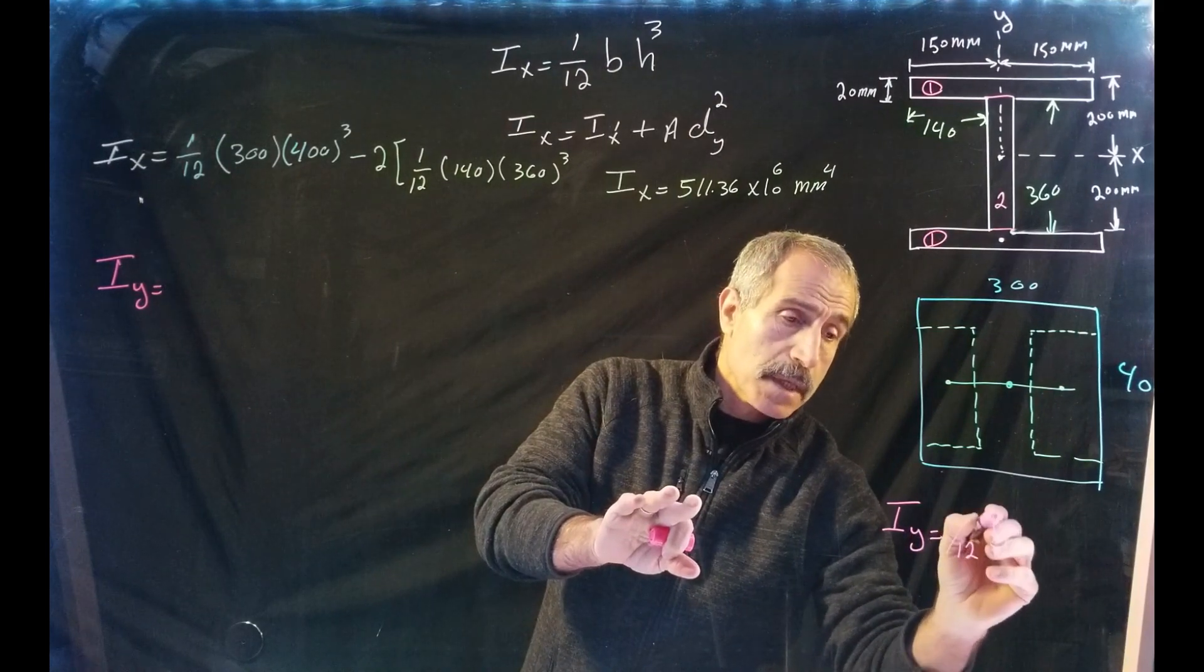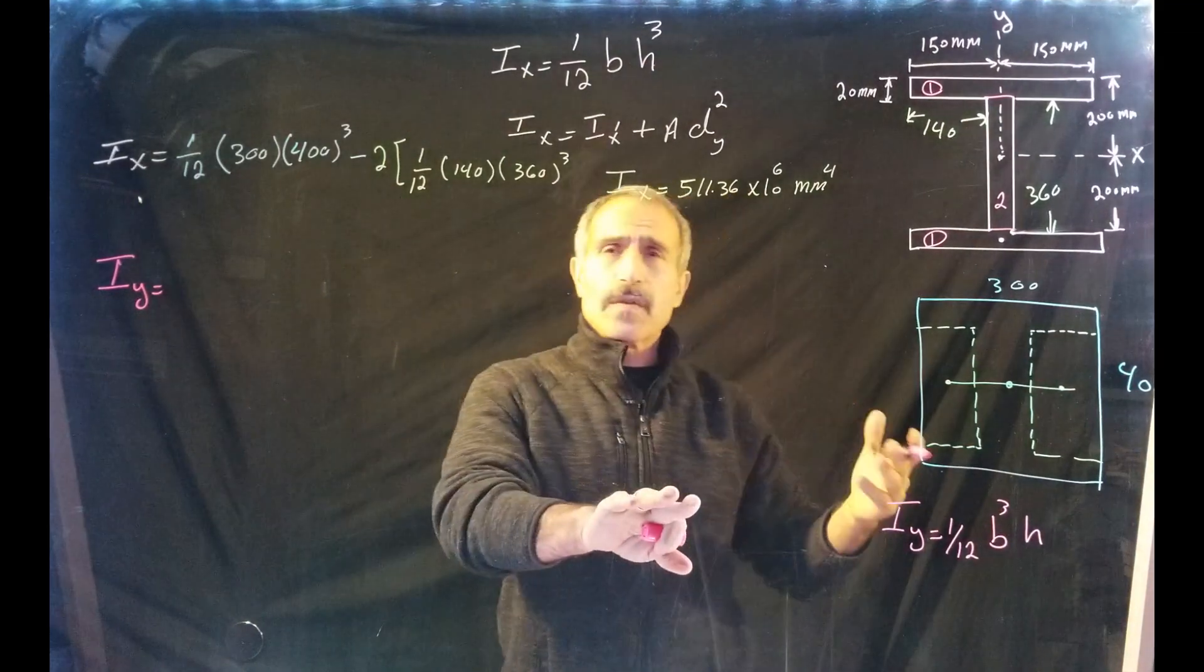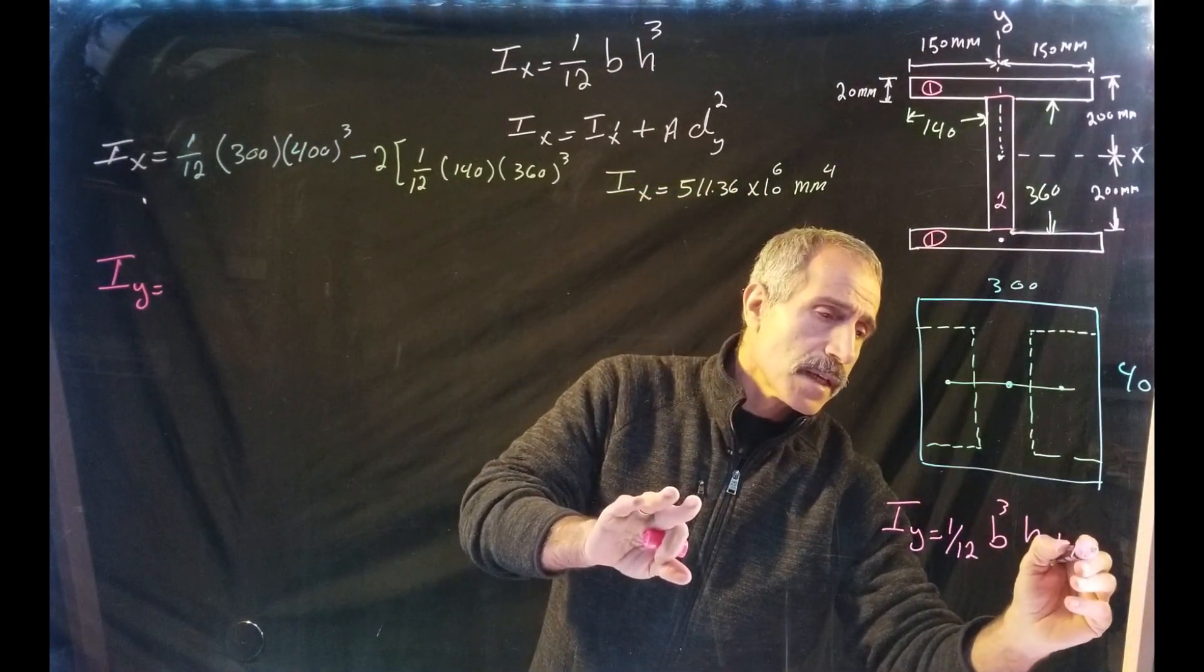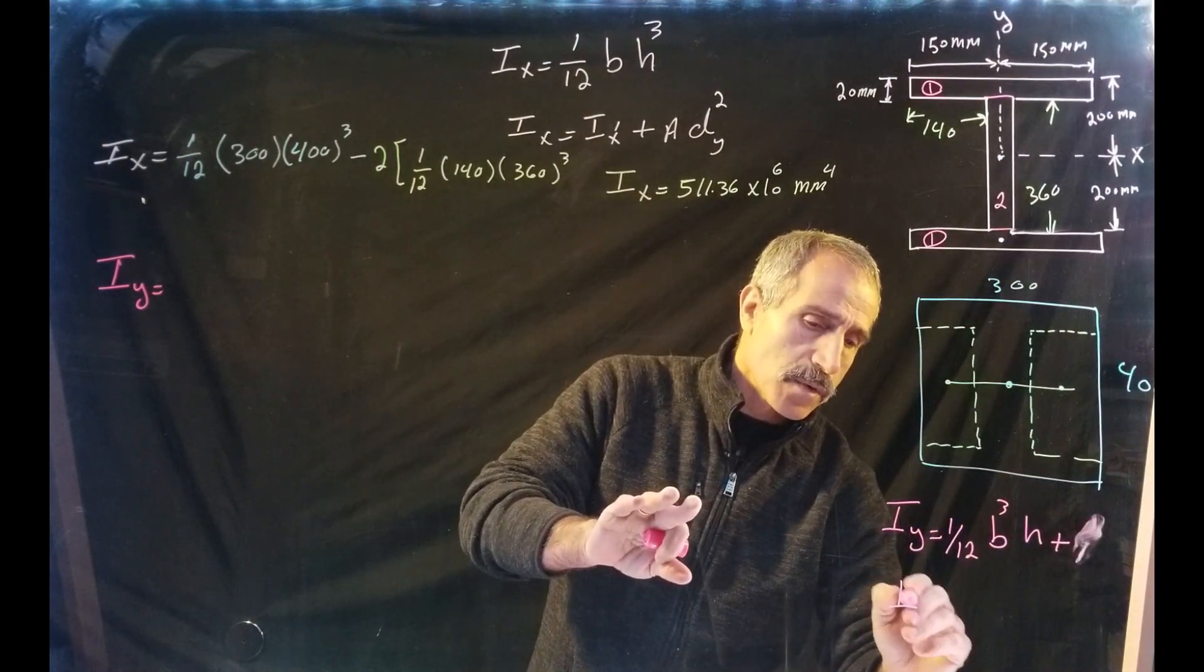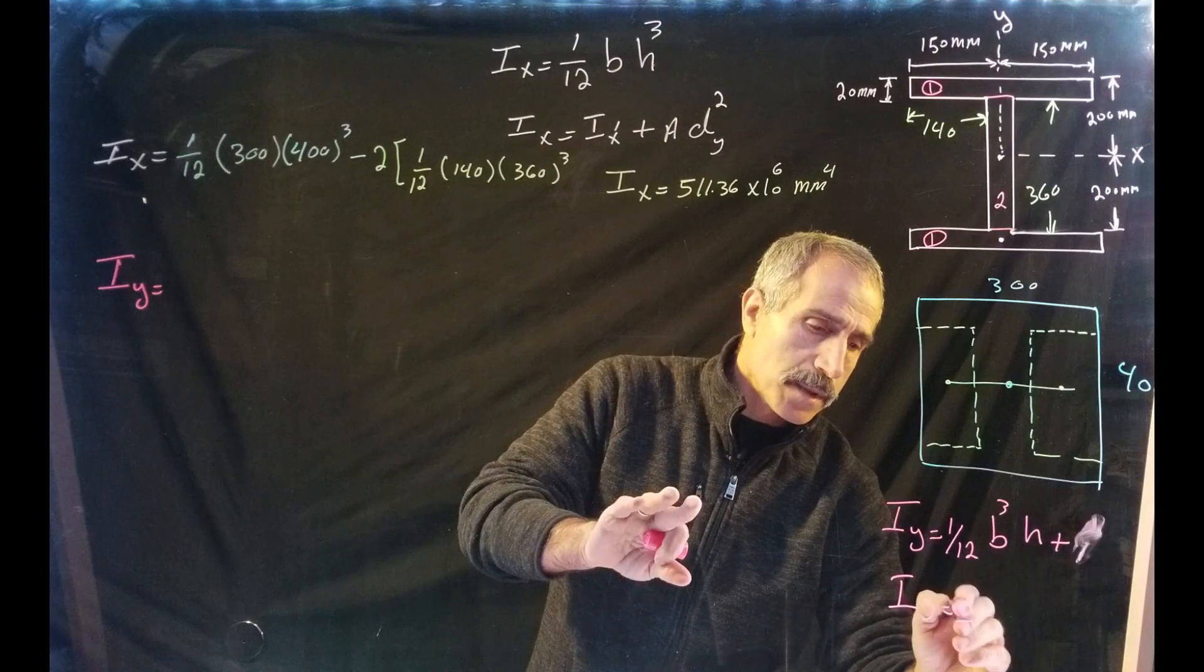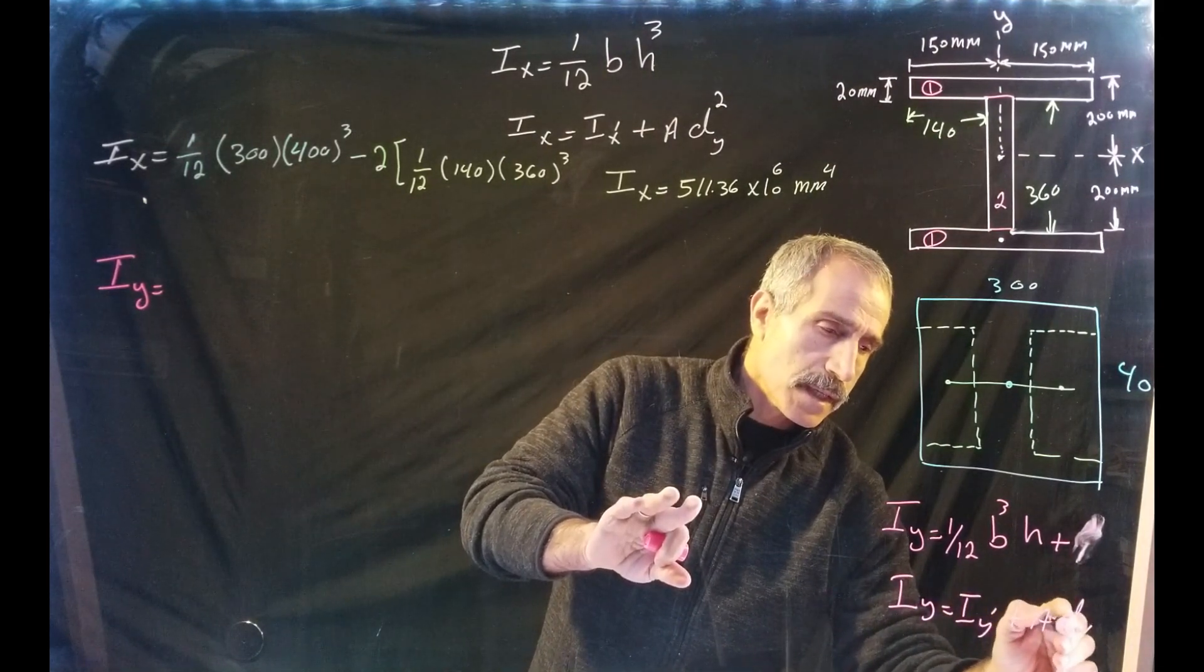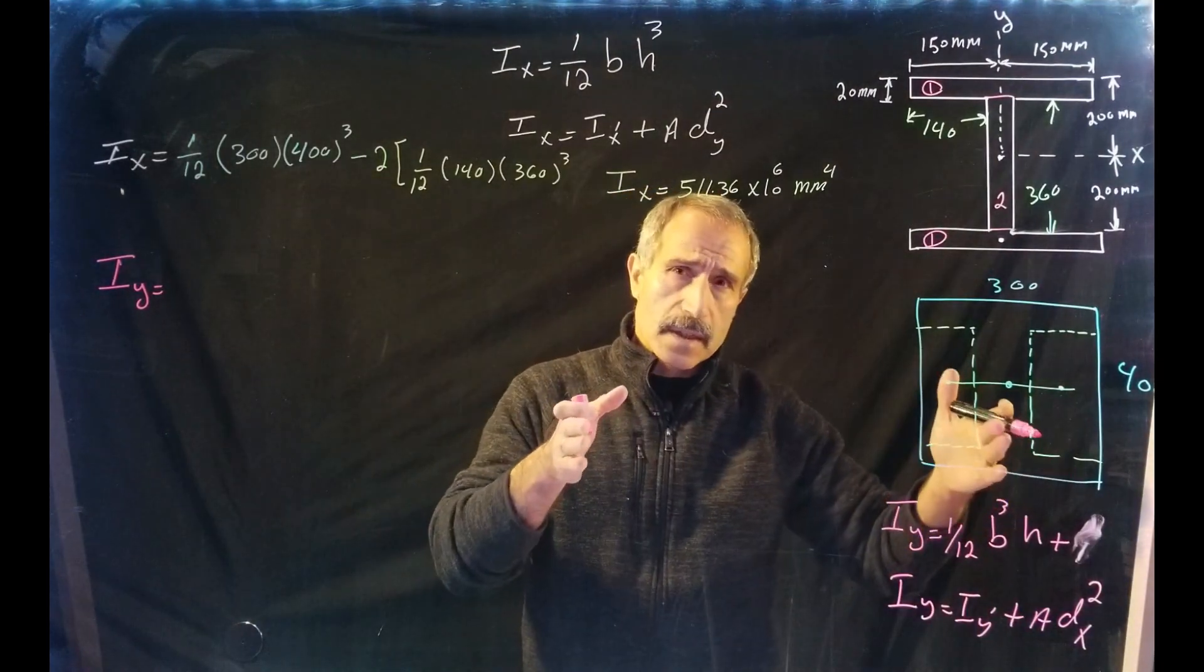Now we talked about Iy. Iy would be 1/12 times b cubed times h, and then if you had to go away from the distance, it would be plus A - well, that'd be for the rectangular shape. Or Iy could be Iy prime plus A times d squared, but your d is going to be in the x direction.